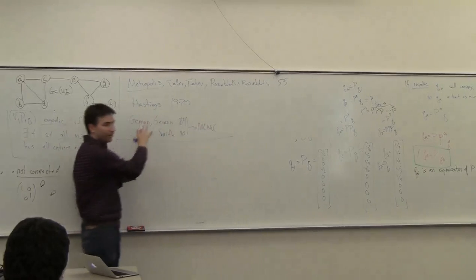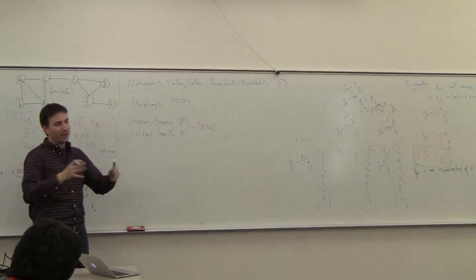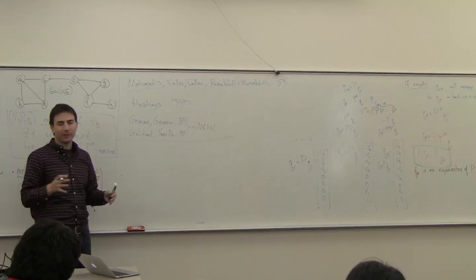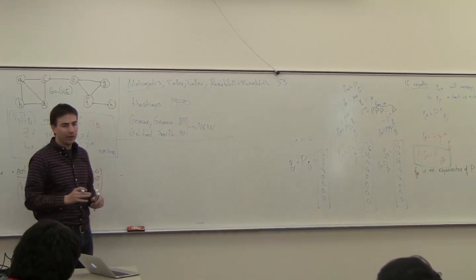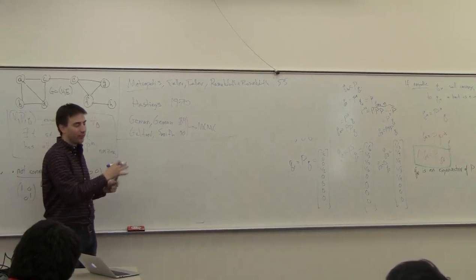And then the Bayesian statistics is kind of like that. There's some implicit definition of the probability, but you don't know how to actually get it in a closed form, and so this allows you to kind of approximate.